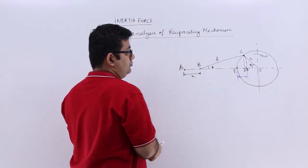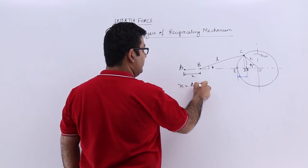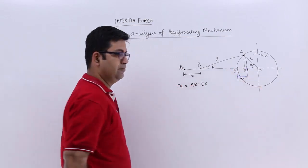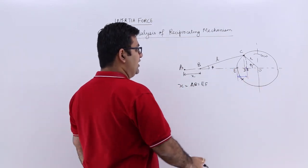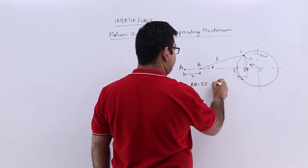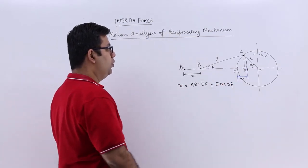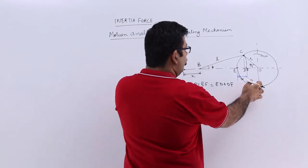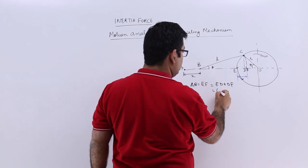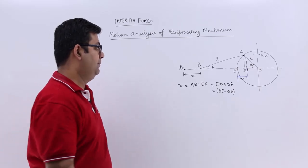So mathematically I can say X is equal to AB which is equal to EF. Now what is EF equal to? EF is equal to ED plus DF. Now what is ED equal to? ED is equal to OE minus OD. So this is OE minus OD plus DF.